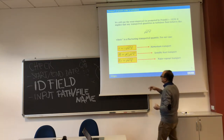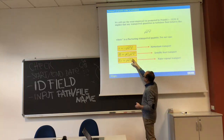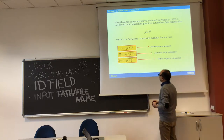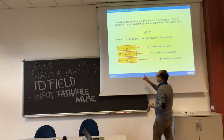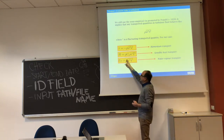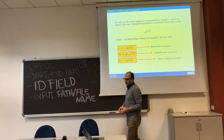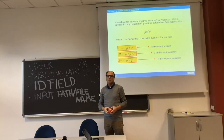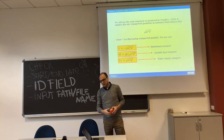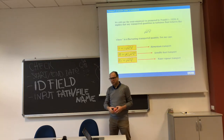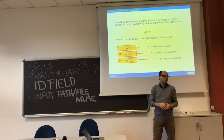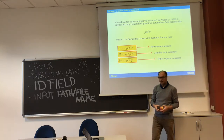These are fluctuations all around the mean motion. The overbar means that we are doing some time averaging.